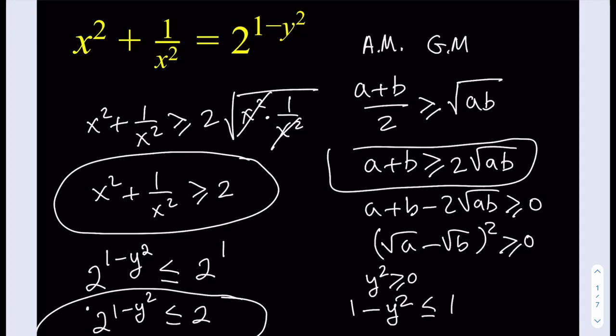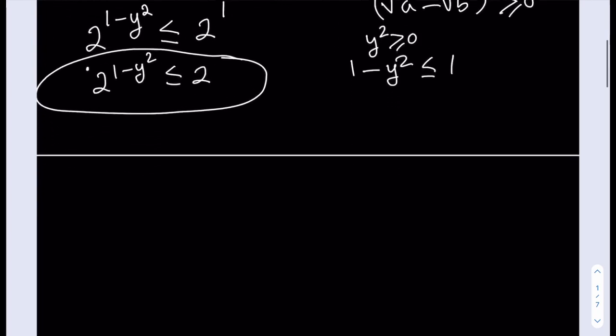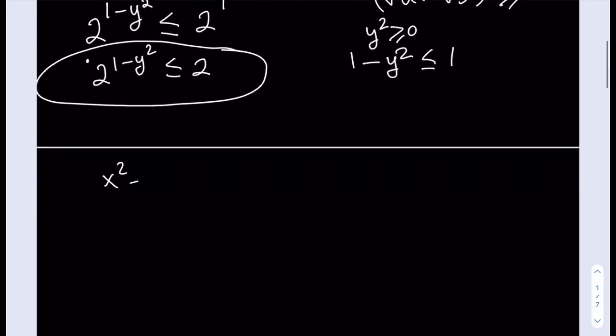The only way this is going to work is if both sides are equal to 2, meaning that this needs to equal 2 and this needs to equal 2, okay? See, this is the beauty of using an inequality to solve an equation because we get two equations from 1, all right?